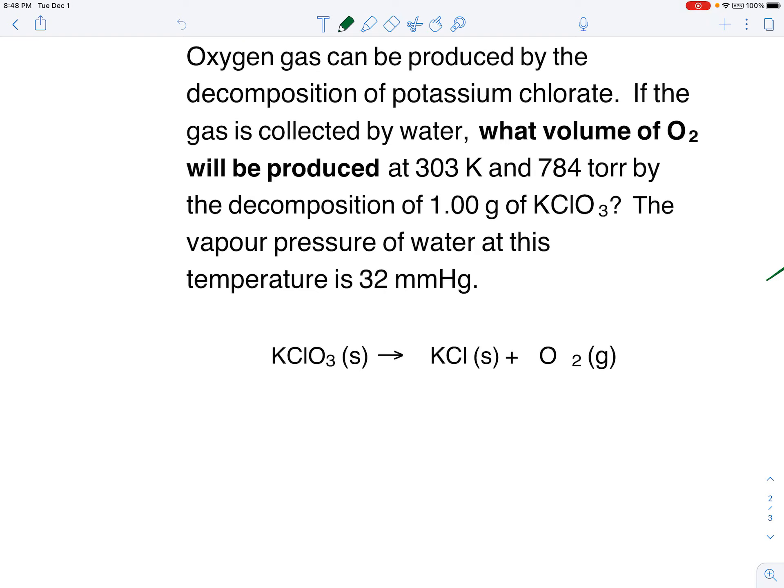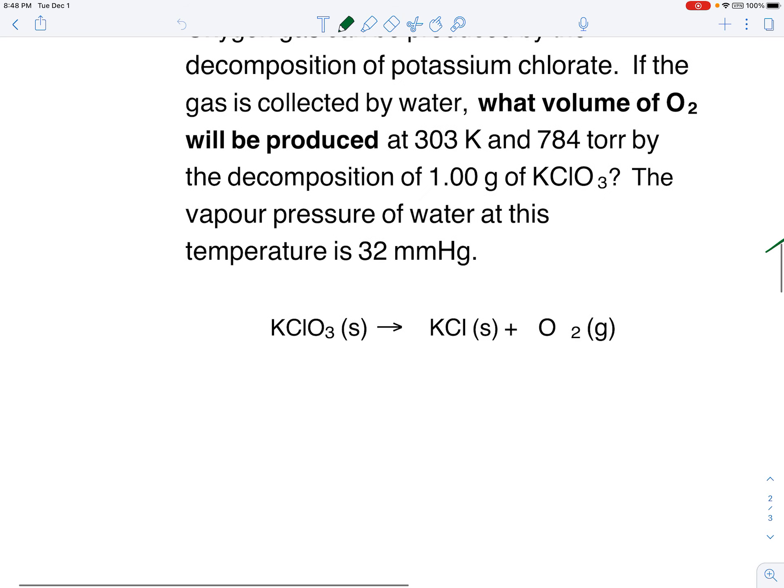So oxygen gas is being produced by the decomposition of potassium chlorate. We can see the equation down below and we notice right away that's not a balanced equation. Forgive the little bit of an issue with the font. The O2, that 2 is kind of far away from the O. So why don't we quickly balance the equation?